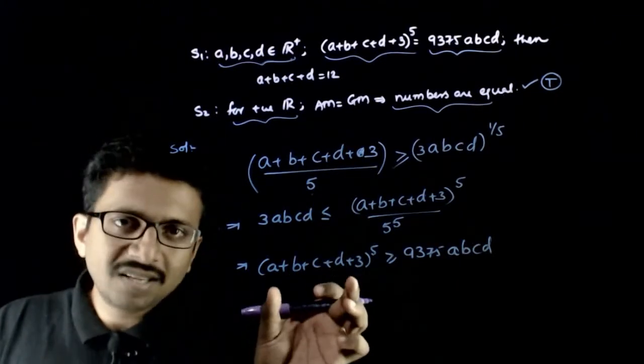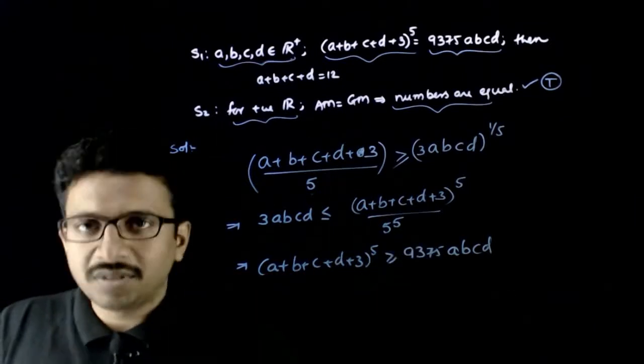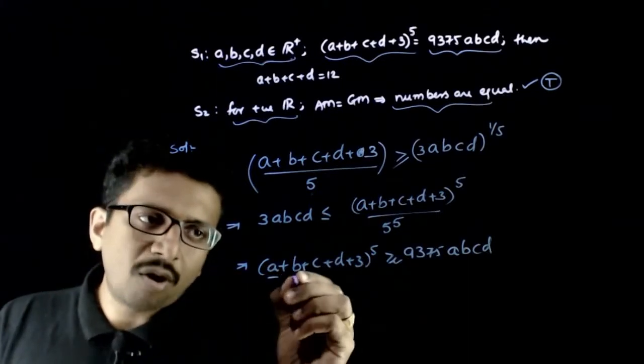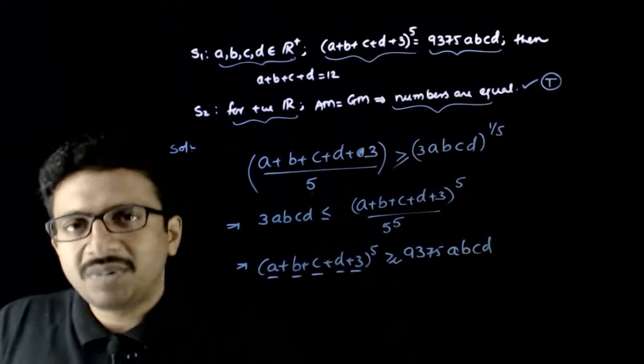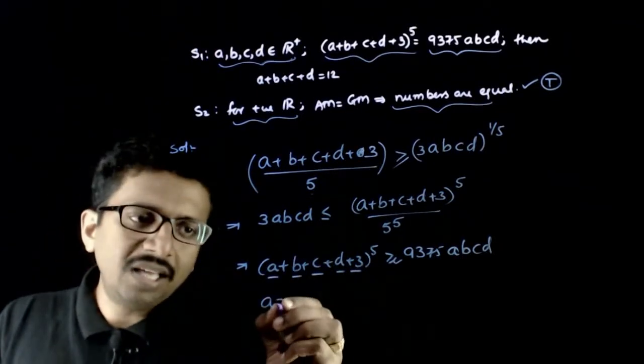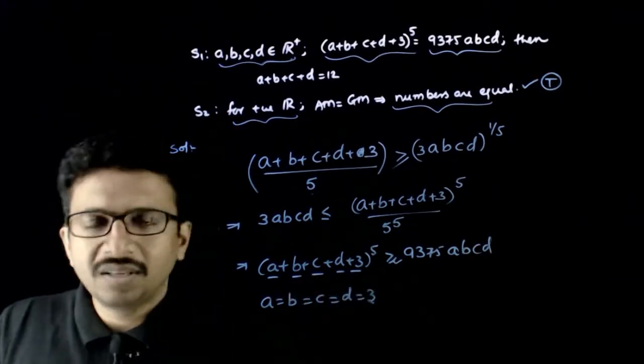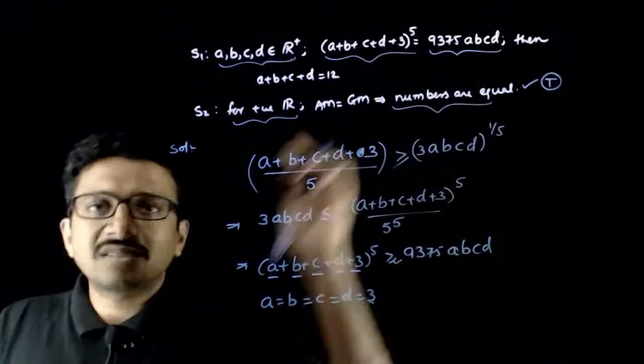It means this will be always greater than or equal to this. When will equality hold? Equality holds only when all these five numbers are equal, that is a equal to b equal to c equal to d is equal to 3. Only then will this happen.